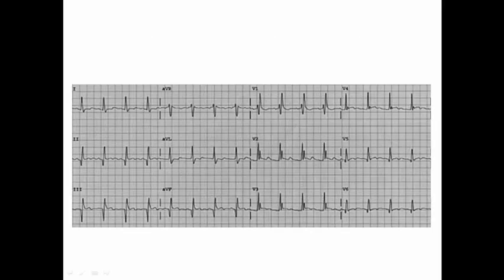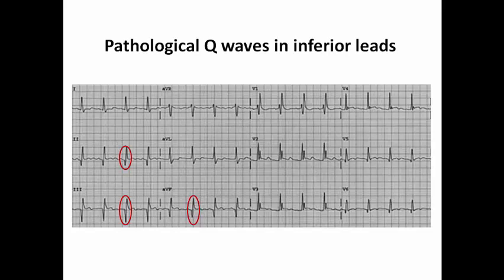In this ECG also, we can see pathological Q-waves in inferior leads fulfilling the criteria, as they are exceeding 30 ms. The ST segment seems to be isoelectric, so it may indicate an old inferior MI. But of course I should check the clinical context and assess the patient in order to decide whether it is acute ongoing myocardial infarction or old infarction.